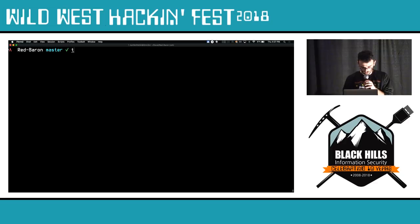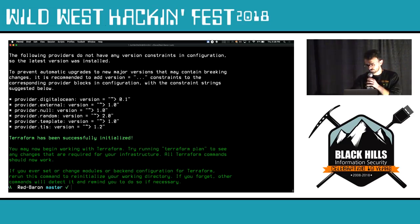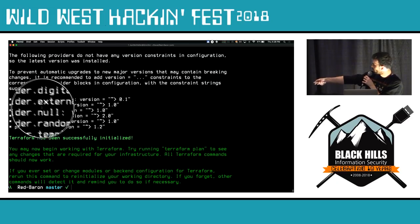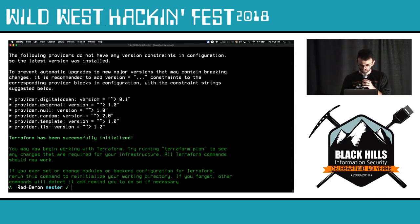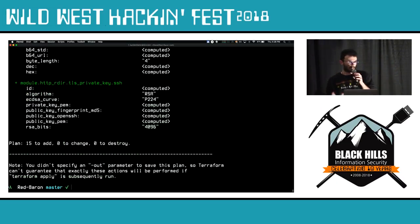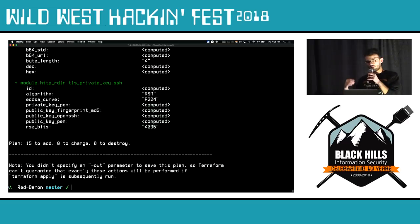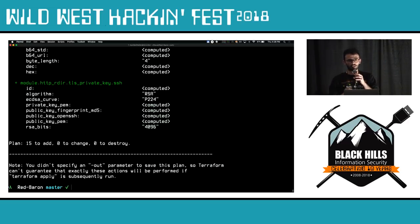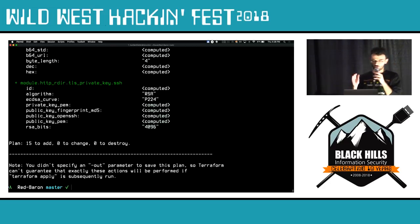We run terraform init. When you first run this it'll take a while if you have a bad internet connection because it needs to download all the providers. From the output you can see it has the DigitalOcean provider, external provider, null, random, and template — all providers needed by the modules. We then run terraform plan. What's also great about the way modules are set up is that by default, firewall rules are generated for each droplet. When you run terraform apply it gets your current public IP address and sets input restrictions so only you can connect to the droplet.